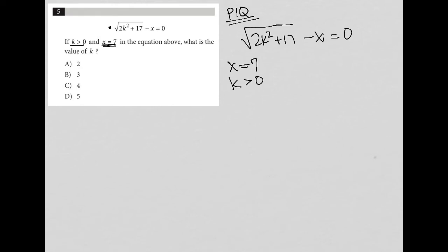There's no value of k to plug in since I'm asked to find k. All this tells me is that k is positive, which will be important later. What I am certain of is that x equals 7, so I'm going to plug that in.